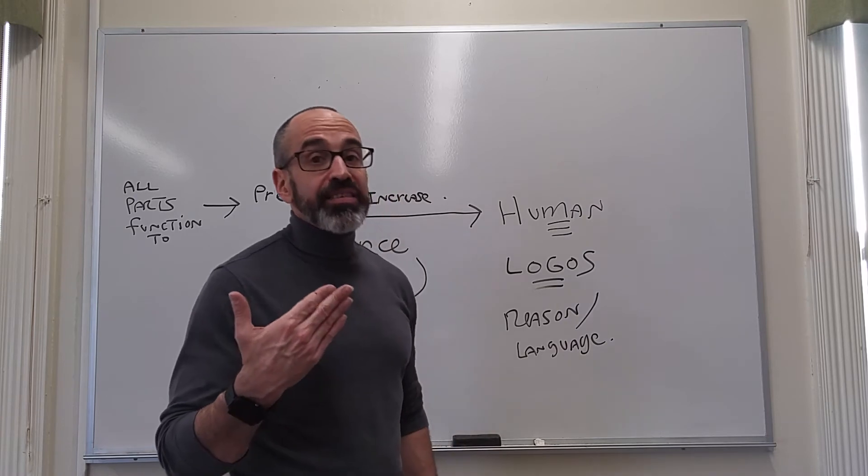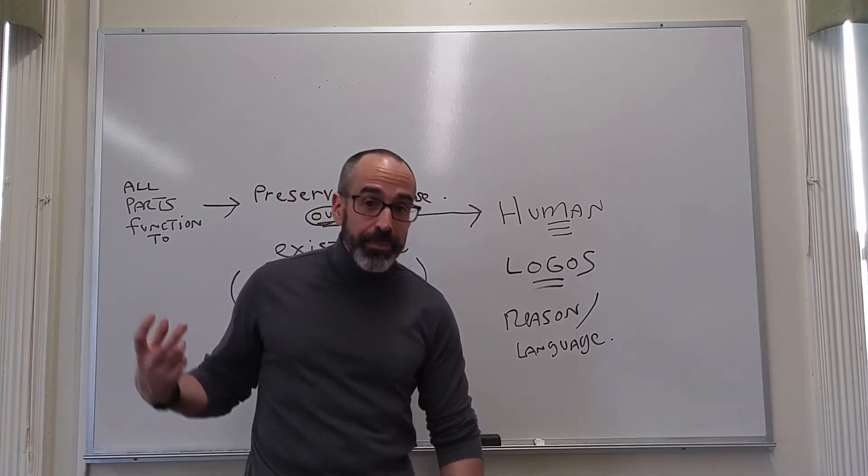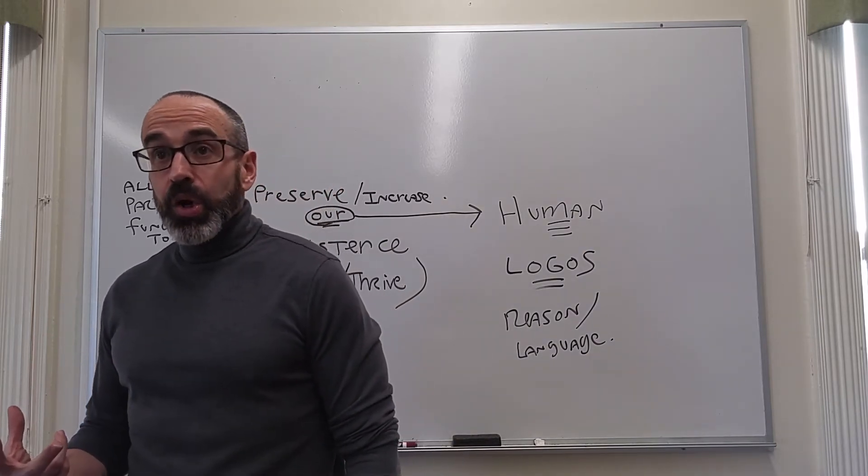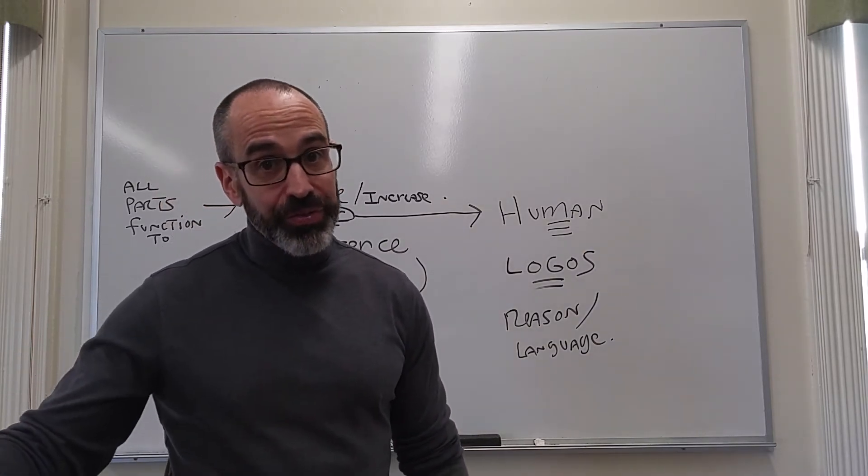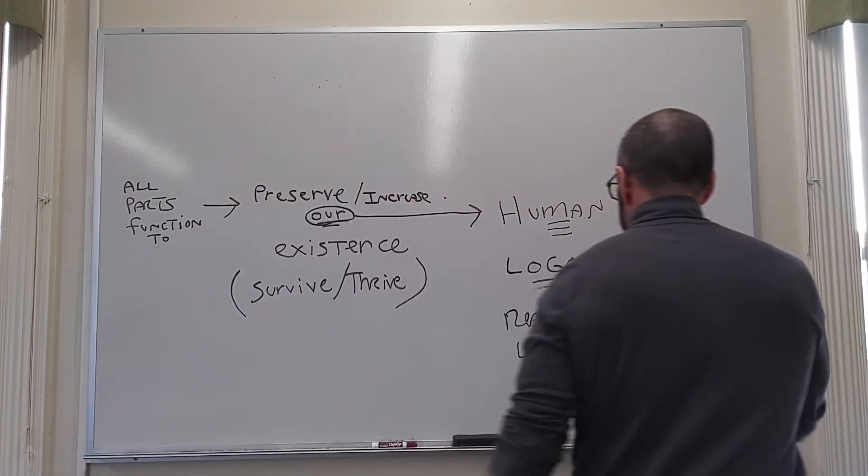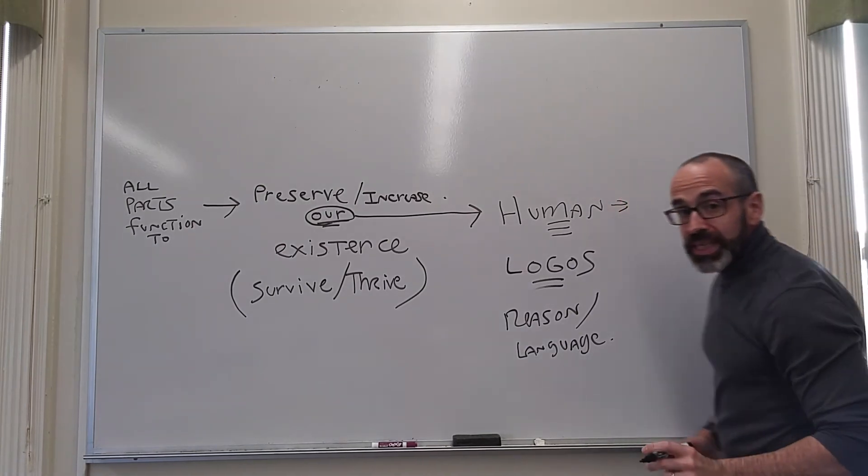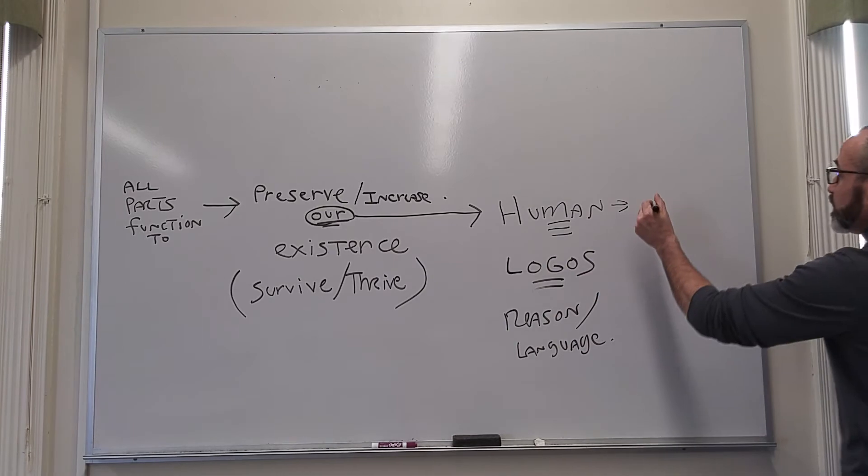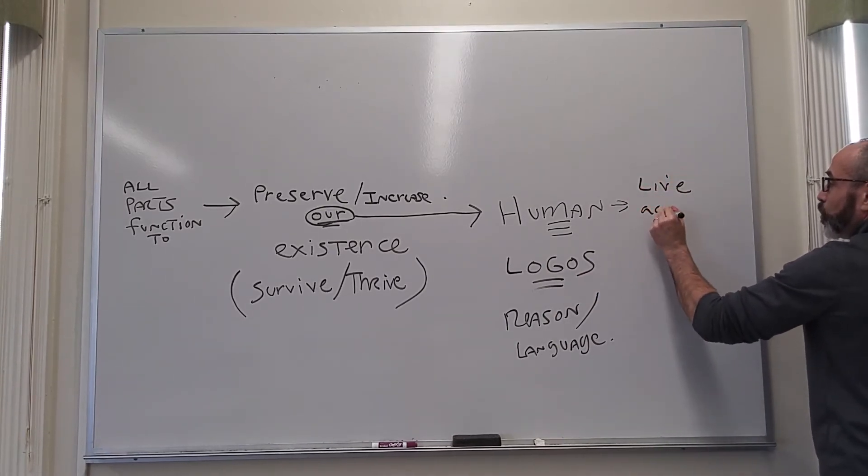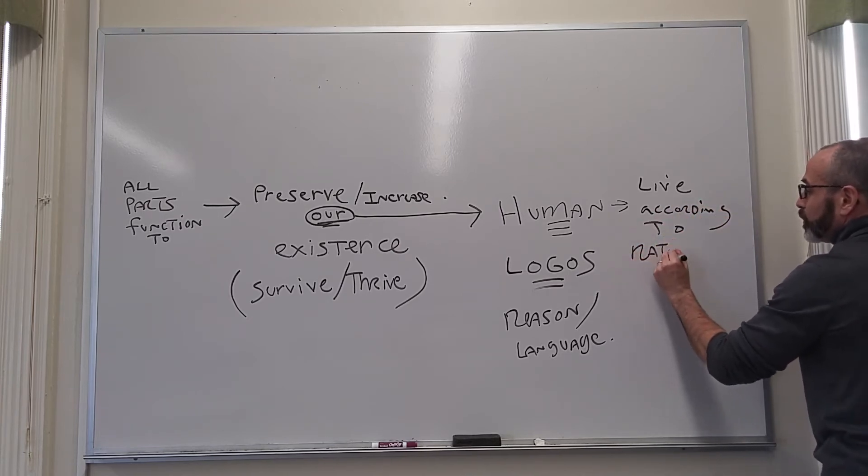Only humans are self-conscious. Only humans, therefore, are able to examine their own actions and determine with their reason whether it's rational to give in to that desire or not. And so human beings, because they're rational beings, what's unique to them is that they live, they alone can live according to rational principles.